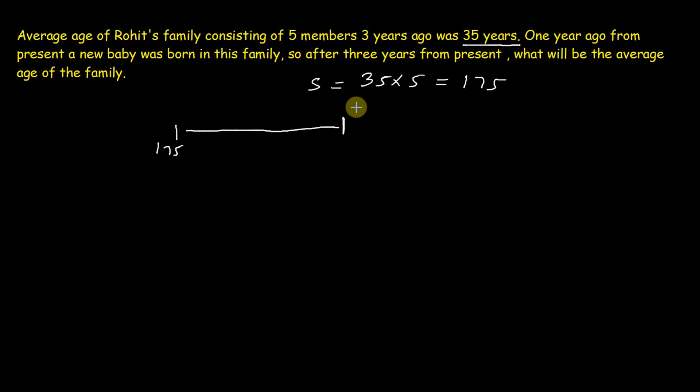Now see our question said 1 year ago from present a baby was born. One year ago from present that means 2 years after from this point. So 2 years after from this point what will be the total age?